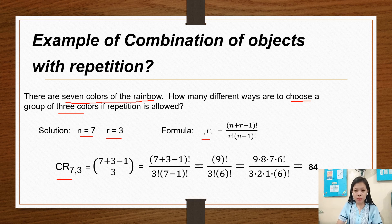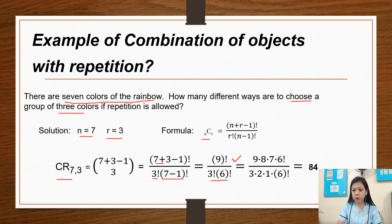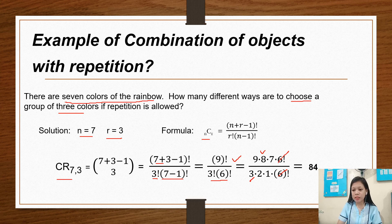So C(7,3) with repetition equals (7 + 3 - 1)! / (3! × (7 - 1)!) = 9! / (3! × 6!). Expanding: 9 × 8 × 7 × 6! / (3 × 2 × 1 × 6!). We cancel out 6!, giving us 9 × 8 × 7 / (3 × 2 × 1) = 84.